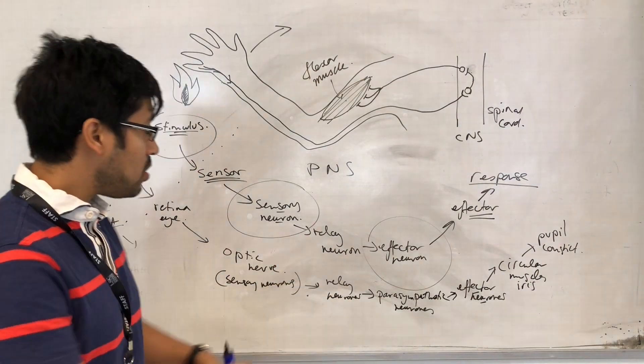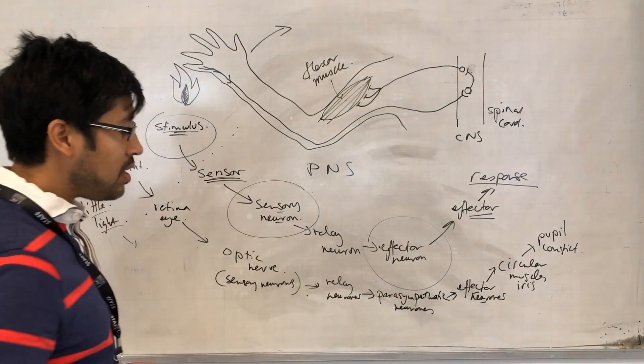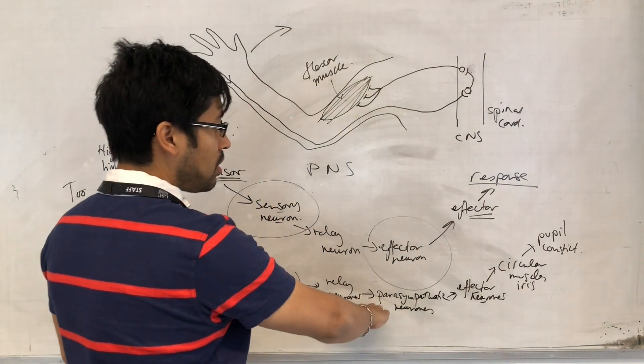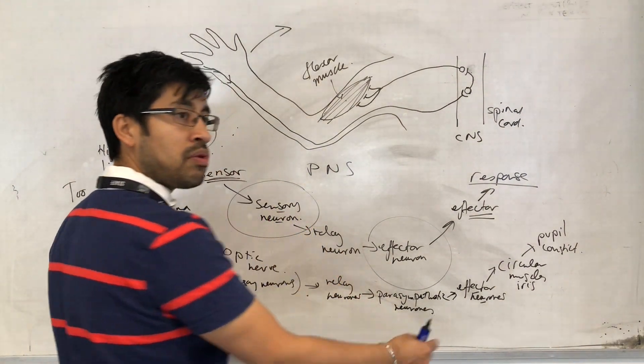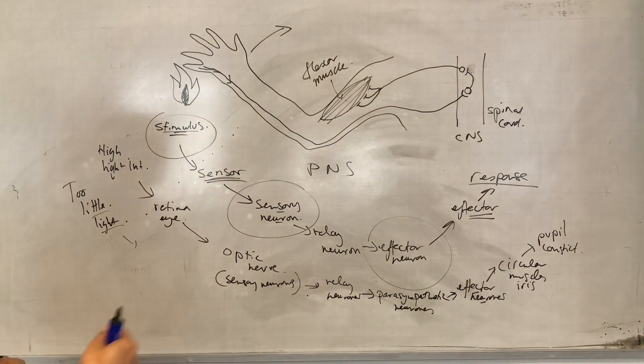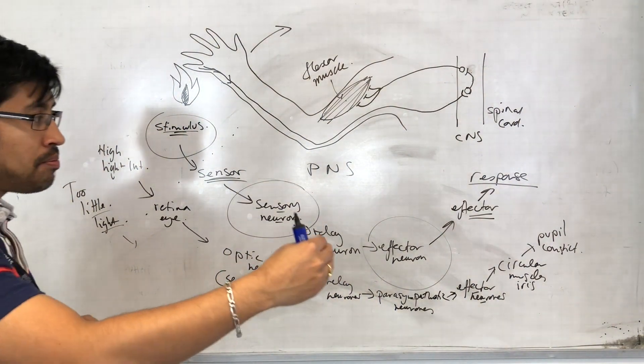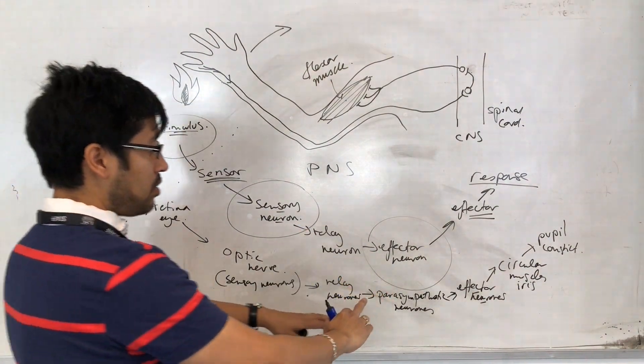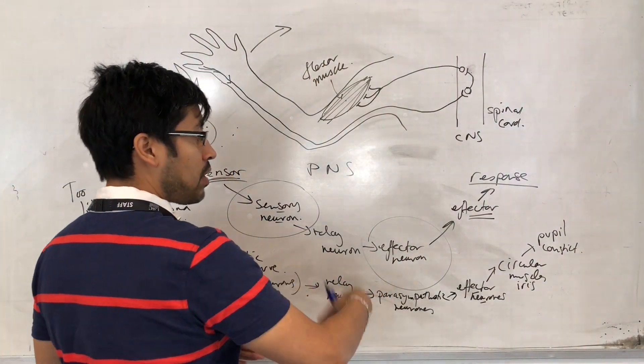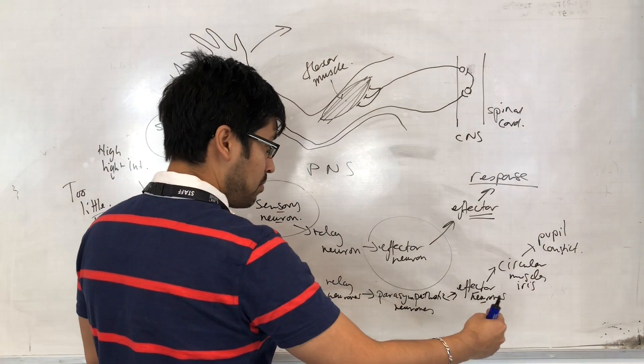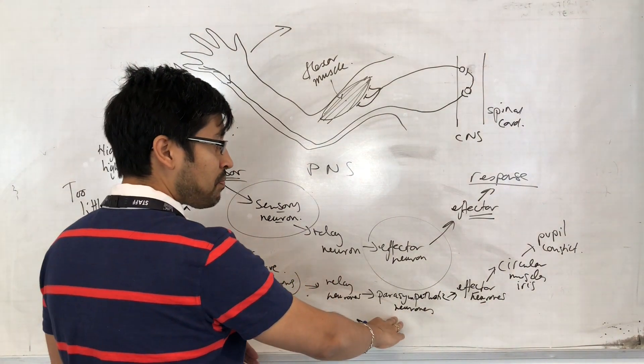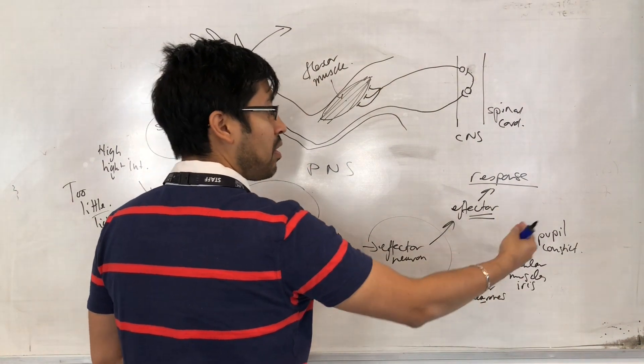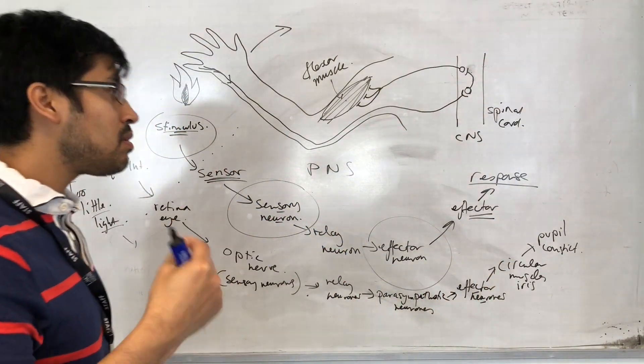very few impulses going through the relay neurons. But then it's going to be the sympathetic neurons that, in this case, are going to act to pass on the impulses to the right effector, because we need a different effector this time. So the sympathetic neurons are going to have impulses moving down them after the relay neurons. They're going to be connected to effector neurons that themselves are connected to the radial muscles.